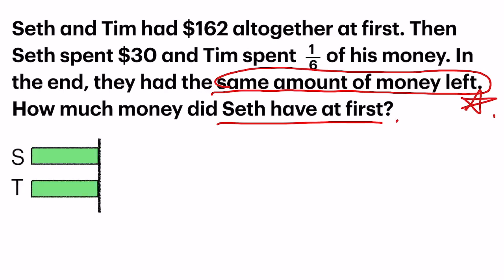Here's my model with equal parts to denote the equal amount of money left. Now let's go to Tim. Tim spent one-sixth of his money, so the fraction that's left is five-sixths. Five-sixths means five units out of six units that he initially had, so I will cut it into five parts. And since we are working backwards, I am going to add back that one unit that he had spent.